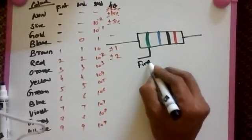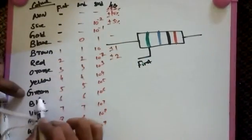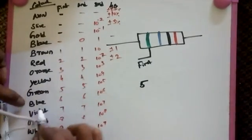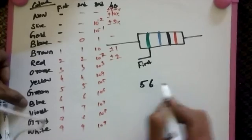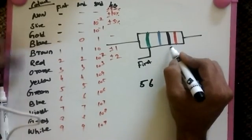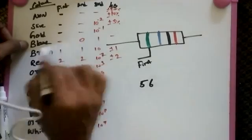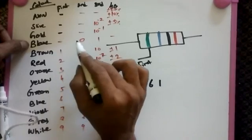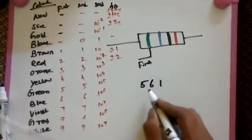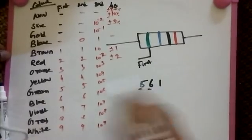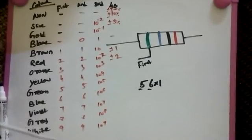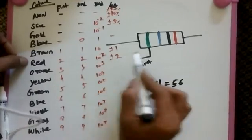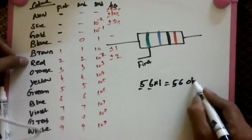Green is five. In second band is blue, we take six. In third one we have black, so black is 1. So we take these two things - five and six. In third one we do multiplication of these two, so we got some value 56. In fourth band we have red, so red is plus or minus 2%. This is resistor value 56 ohms.